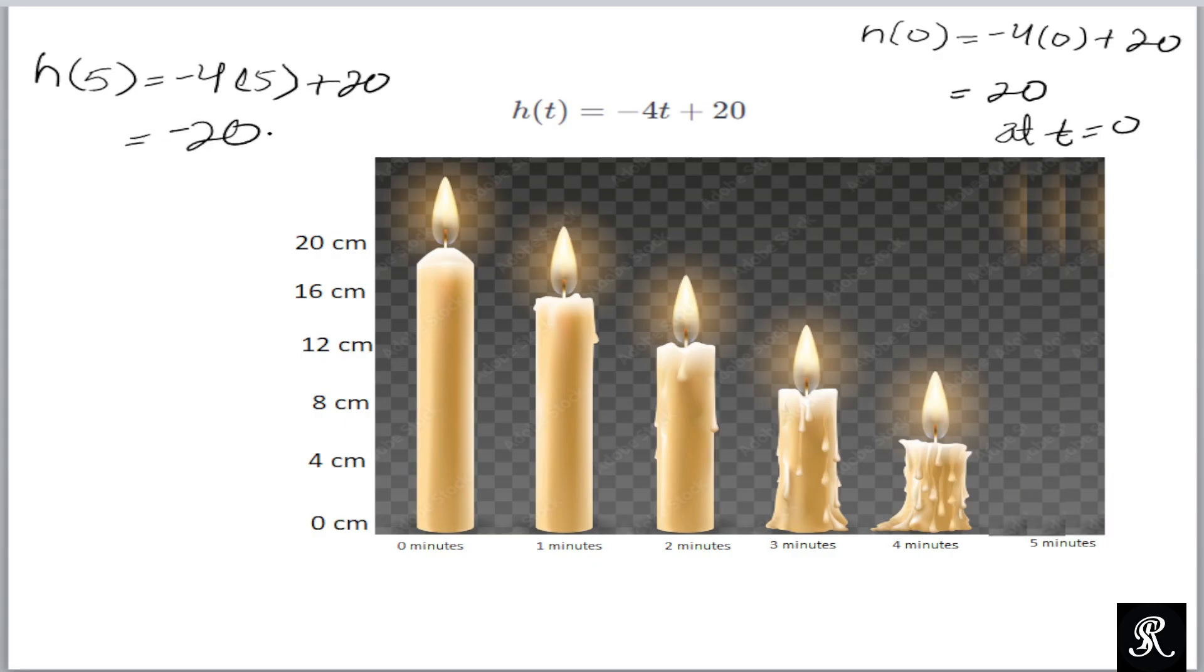So that would be negative 20 plus 20, that would give you zero. This means the whole candle will vanish or burn out after five minutes and we'll get zero height. And also we are asked about the domain and range.